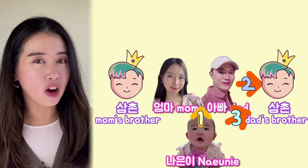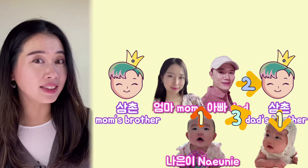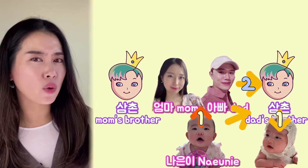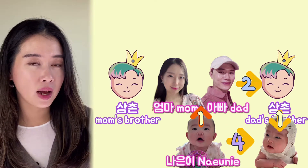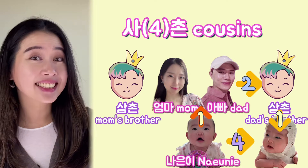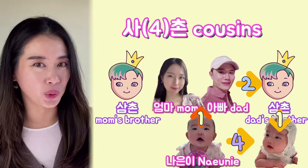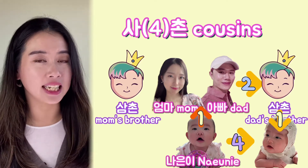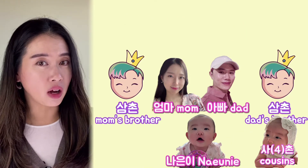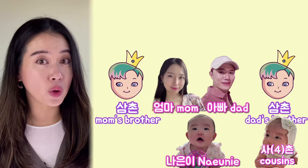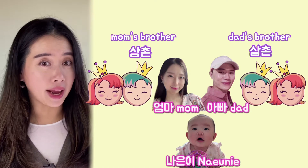If the uncle has children, that's another one tie added. So the cousin becomes the number after 삼 — 사. 사촌. That's why you call your cousin 사촌 in Korean. 삼촌 is uncle, 사촌 is their kids. And what about 삼촌's wives?